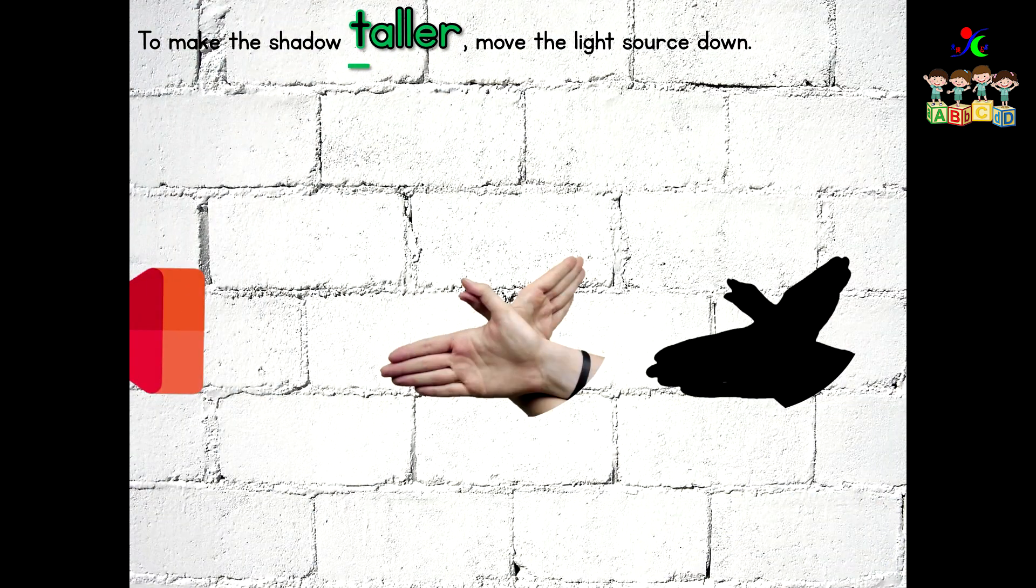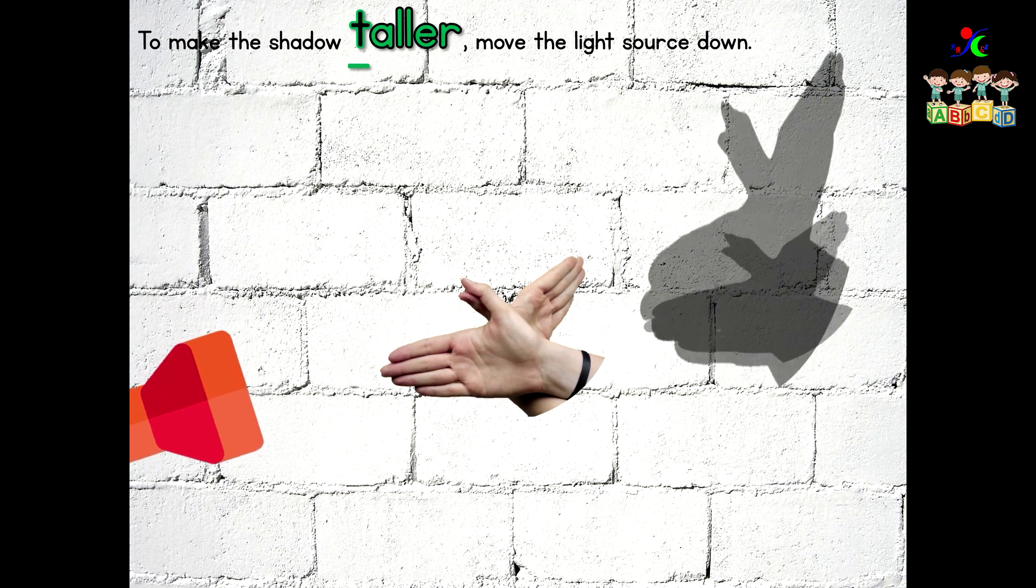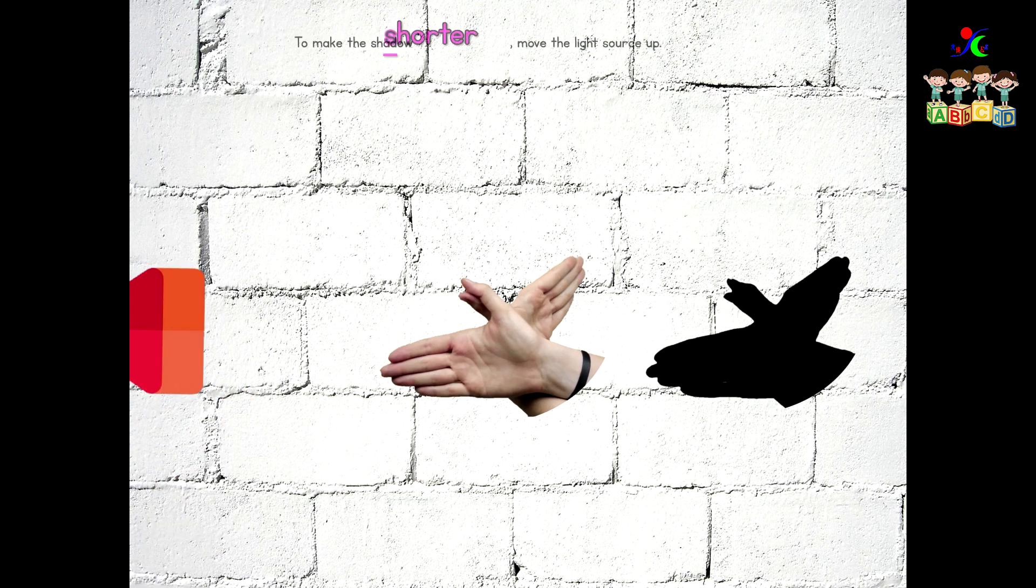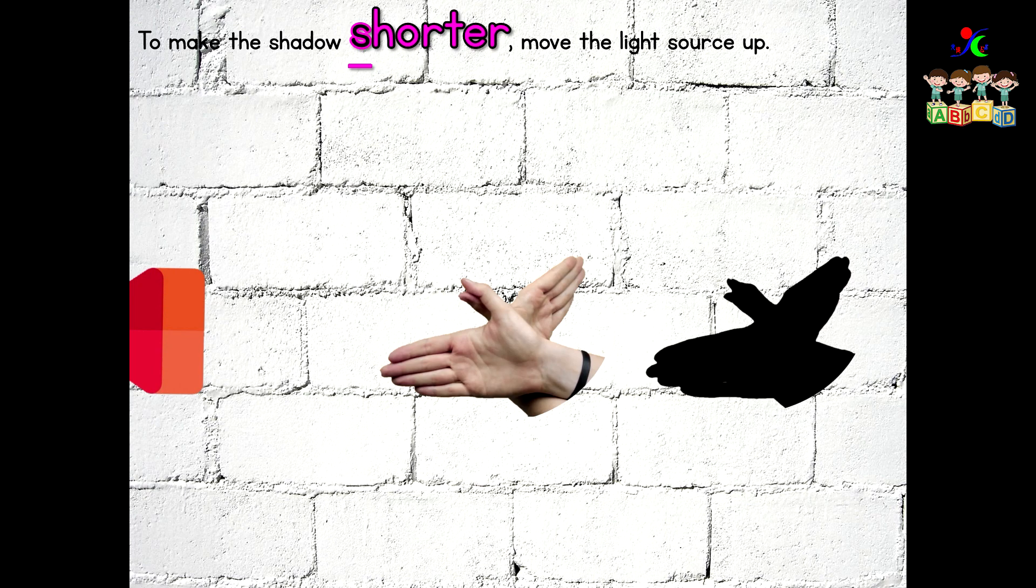To make the shadow taller, move the light source down. To make the shadow shorter, move the light source up.